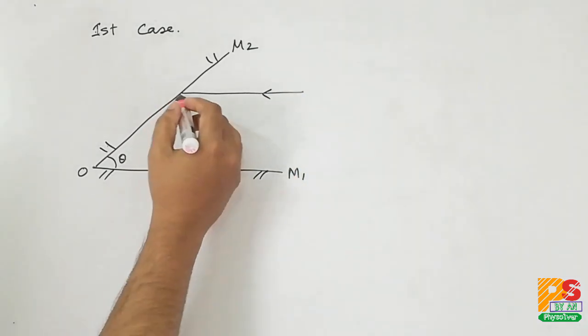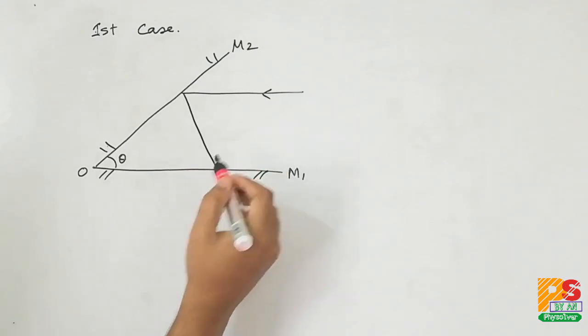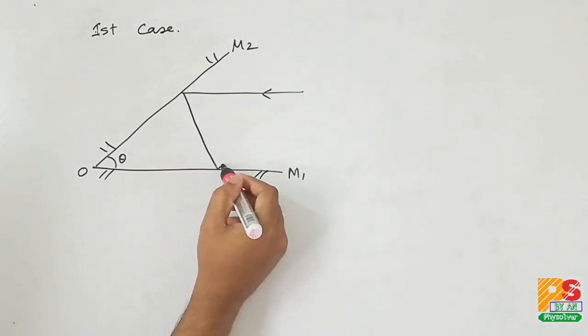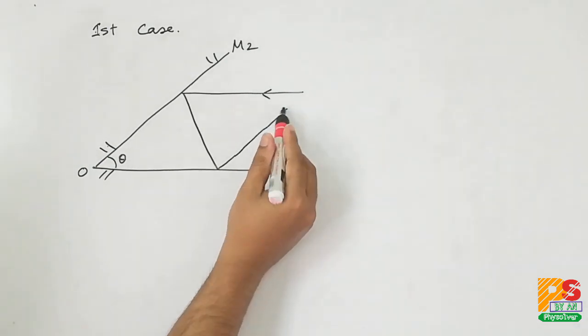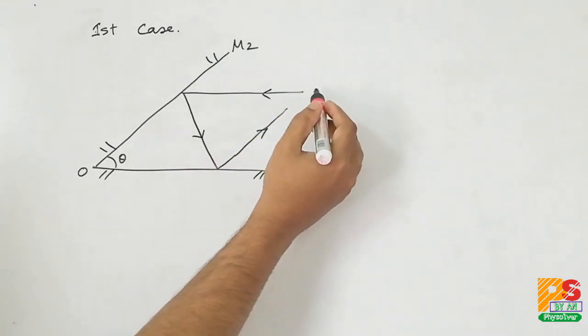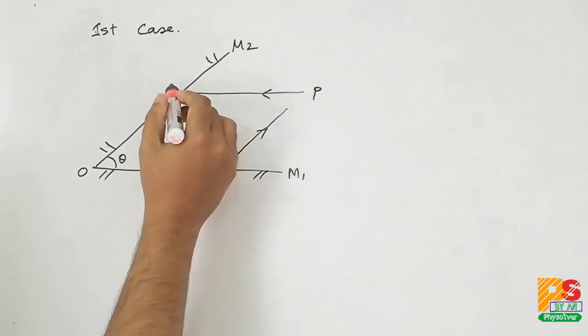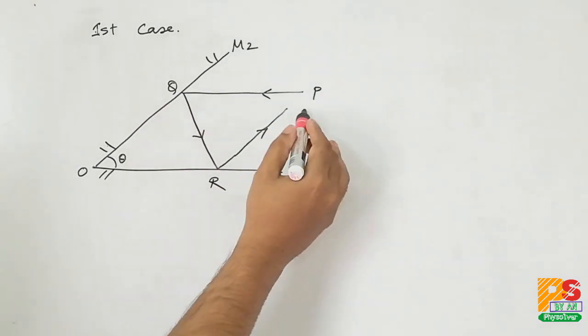It is given that this incident ray is parallel to mirror OM1, and this is the emergent ray which is parallel to OM2 mirror. PQRS is the path of the ray.